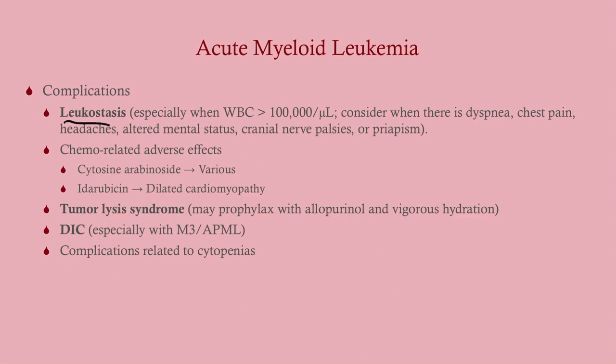Complications include leukostasis, where a massive white cell burden sludges the blood — look for dyspnea, chest pain, headaches, and altered mental status. Chemo-related adverse effects: cytarabine (also called cytosine arabinoside or Ara-C) has various side effects; idarubicin, like all anthracyclines, can cause dilated cardiomyopathy. Other complications include tumor lysis syndrome, DIC (particularly with M3/APML, associated with Auer rods), and complications related to cytopenias.